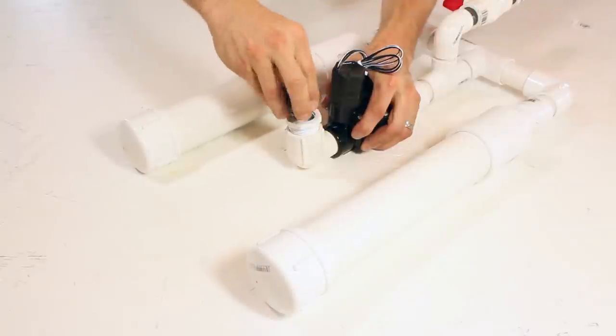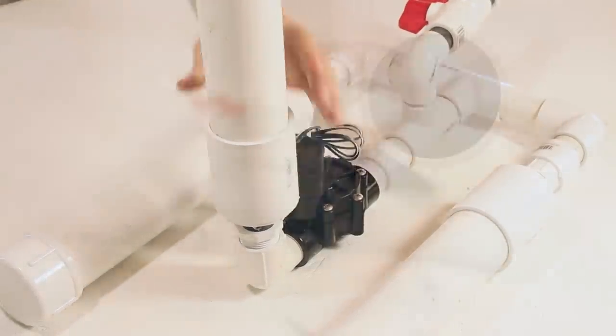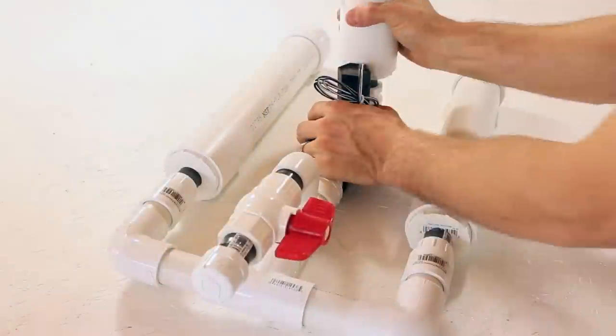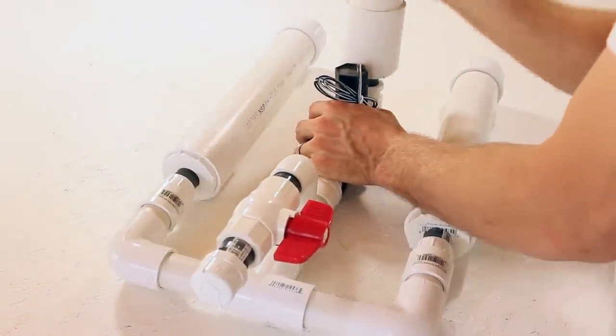This 90 degree elbow will be my base for a 2 foot tube of 2 inch PVC pipe that will act as my cannon barrel. It's looking really good, and I'm very happy with the design, so it's time to glue it up.